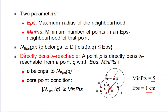Mathematically, for a particular point P, the epsilon neighborhood means Q should belong to the given dataset and the distance between point P and point Q should be less than the epsilon value. Then we can say that point P is within the neighborhood of Q.